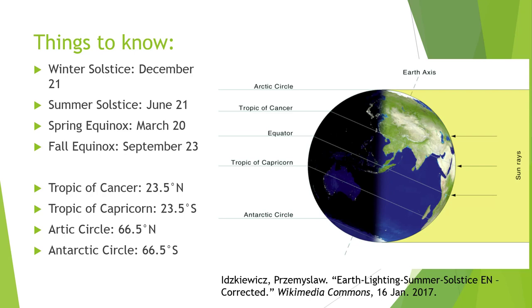Then we have the spring equinox and the fall equinox — March 20th and September 23rd, give or take a day. These are important because the Earth gets 12 hours of daylight and 12 hours of darkness. This is important because of how sunlight hits the Earth — it's hitting it equally across the entire planet.